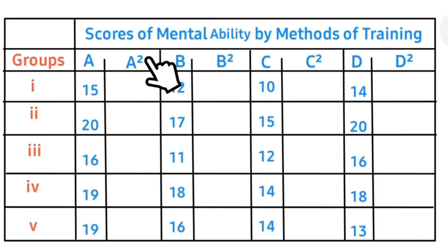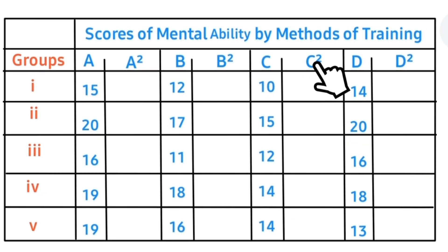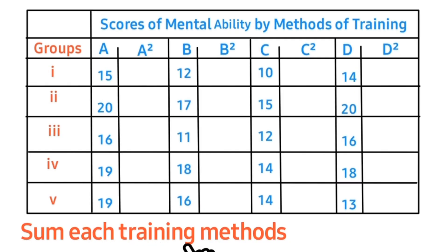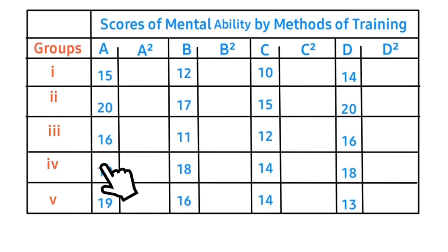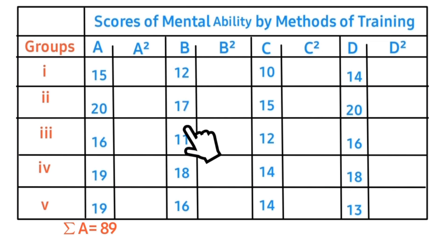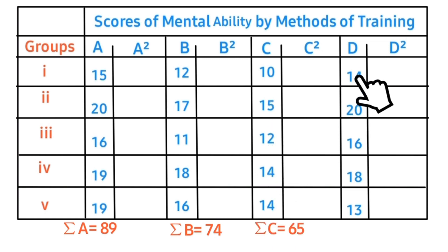Create a column for the square of each training method. We have a column for the square of training method A, a column for the square of training method B, a column for training method C, and a column for training method D. Sum each training method: for method A we have 15 plus values continuing through 12, 17, 10, 15, 14, 20, and the rest of the entries.